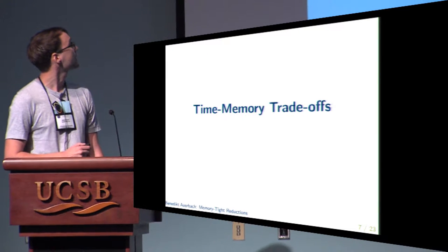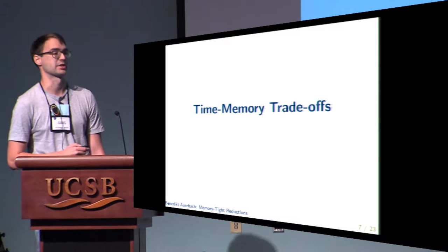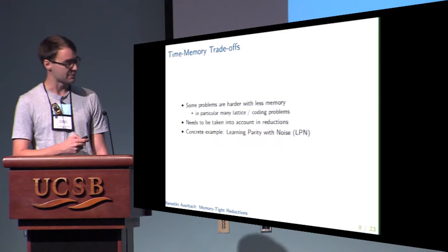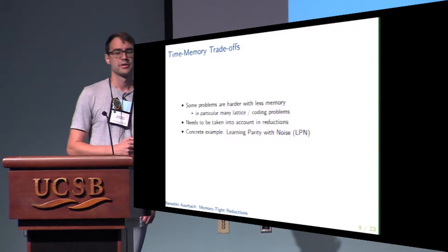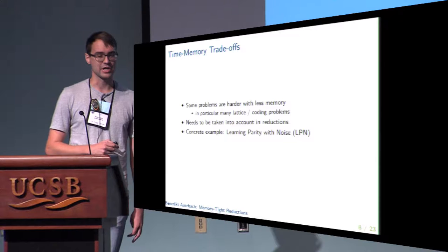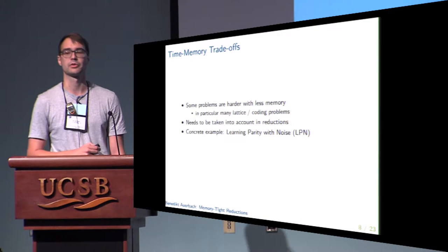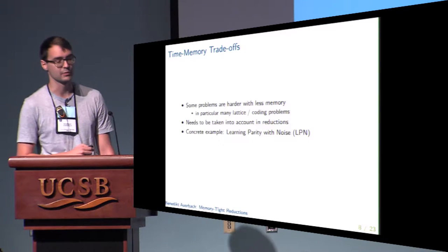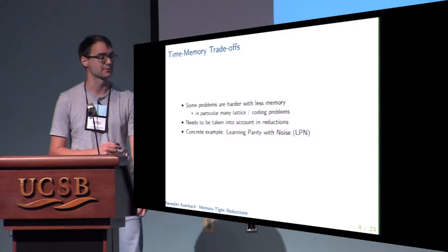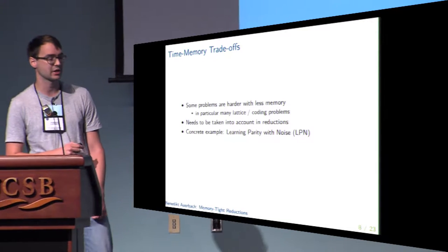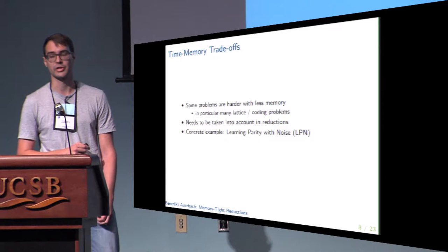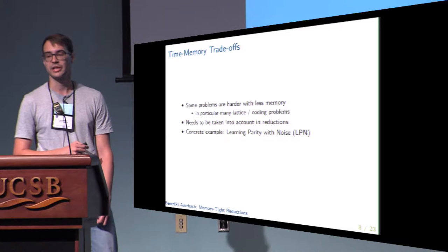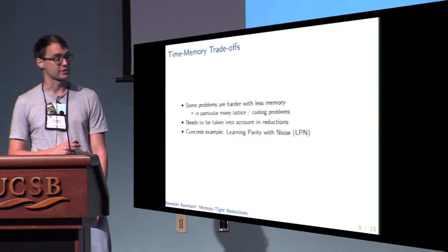Now let's look at why memory in reductions matters. For this we are going to look at time-memory trade-offs. An important observation is that for several problems relevant for cryptography, the best known algorithms actually require high memory — or to phrase it differently, some problems are harder to solve if less memory is available. This holds particularly for several lattice or coding-based problems, and as we will see, this needs to be taken into account when deriving concrete security statements.